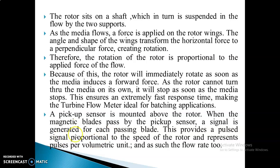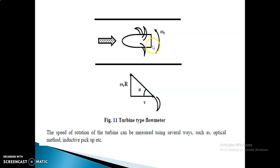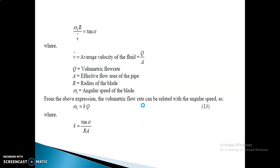Using the captured signal, we can calculate the speed of the rotor and from that the flow rate. Looking at the blade construction, the angular quantity is denoted as wr. The speed of rotation of the turbine can be measured using an optical method or inductive pickup. The expression is: wr × r / v = tan α, and using the Pythagorean theorem we can calculate the value of tan α.